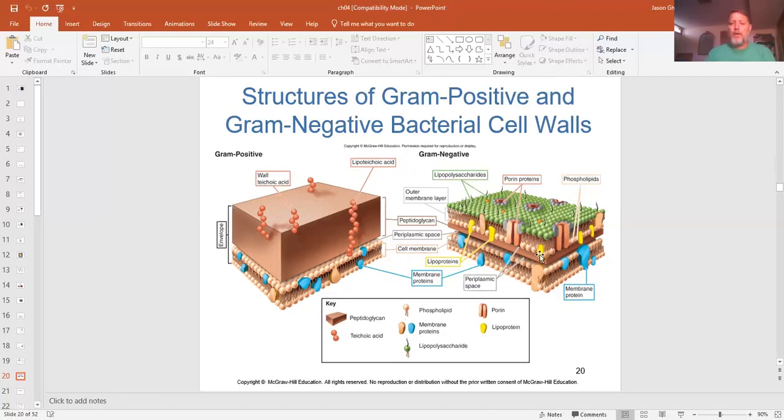But over here on the gram negative, you see both of them have a normal plasma membrane, but on this outer membrane, the outer layer is full of lipopolysaccharides, and that's that endotoxin that gets released when gram negative cells die and break down.